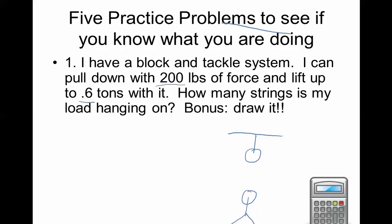We are pulling up 0.6 tons and pulling with 200 pounds. Starting with one set of strings — with one fixed and one movable pulley, the load hangs on two strings, meaning you only have to pull with half the mass. Let's check the mechanical advantage: for any simple machine, it's output force divided by input force.